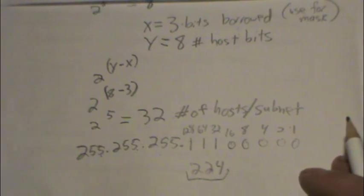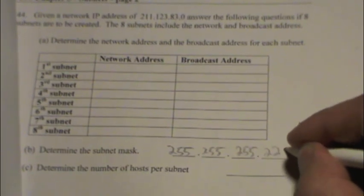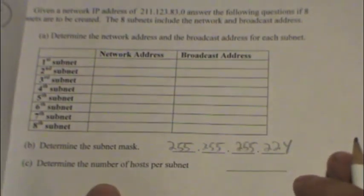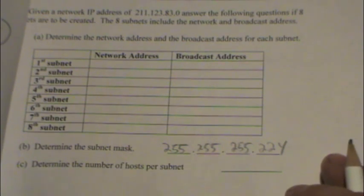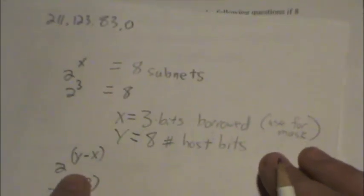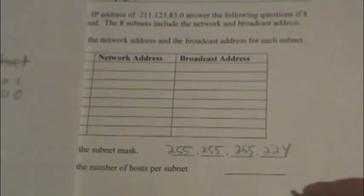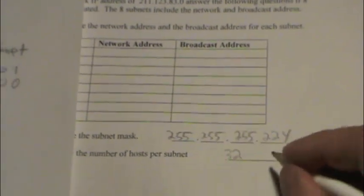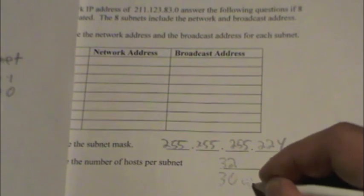So we can start filling in our table here, dot 224. We also need to determine the number of hosts per subnet. That was solved by 2 to the y minus x. As you remember, number of hosts per subnet is 32. You could also annotate perhaps, if you wanted to, 30 usable.